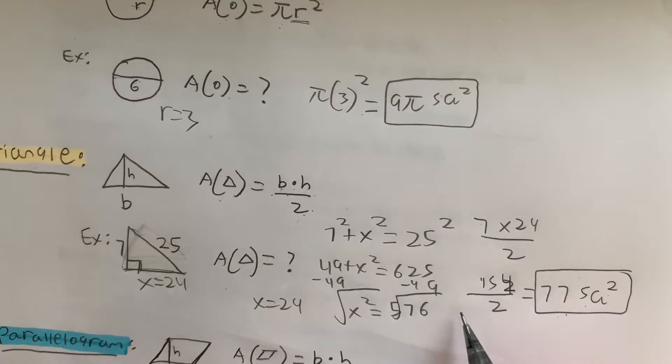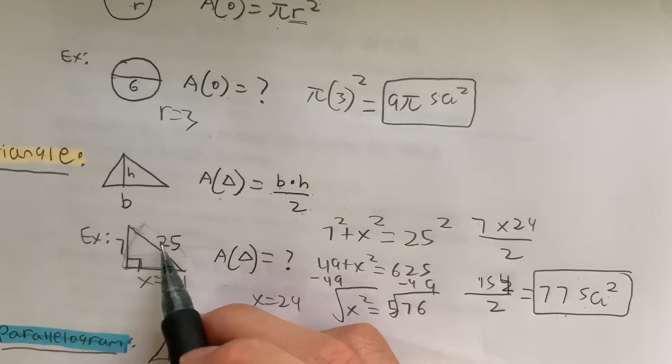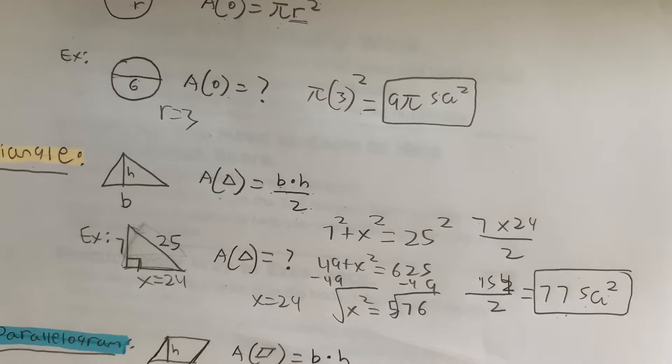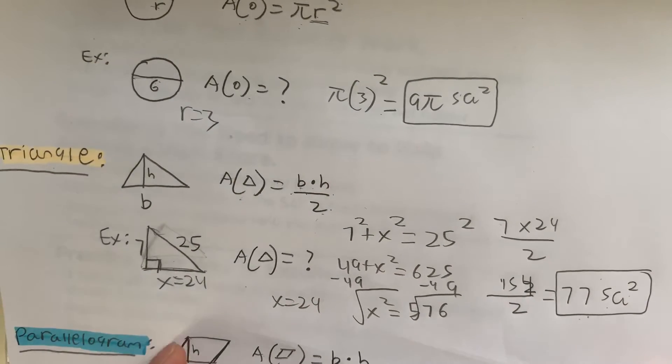Alright guys, if you don't know how I derived 24 from this, check out my right triangle video where I explain the hypotenuse and the Pythagorean theorem. So check that out if you don't understand how I got 24 from this.